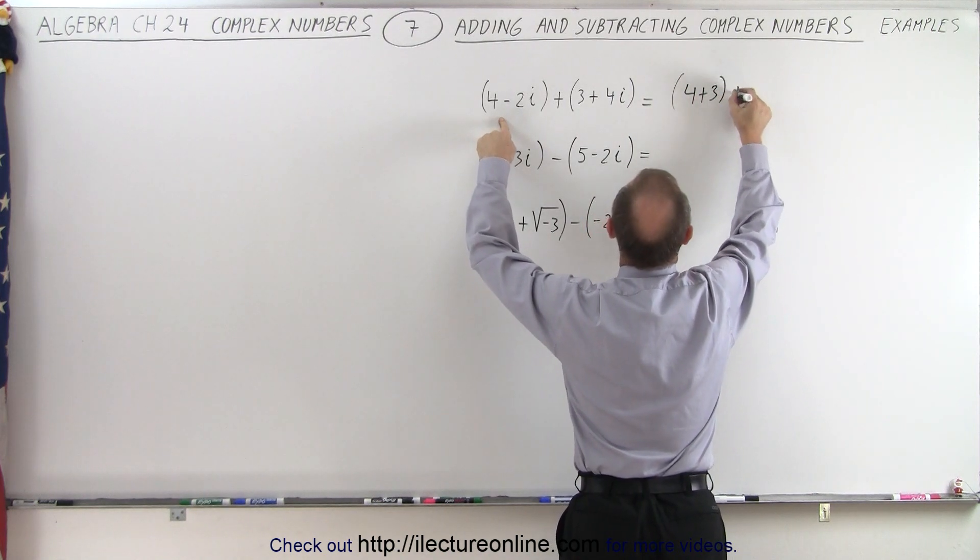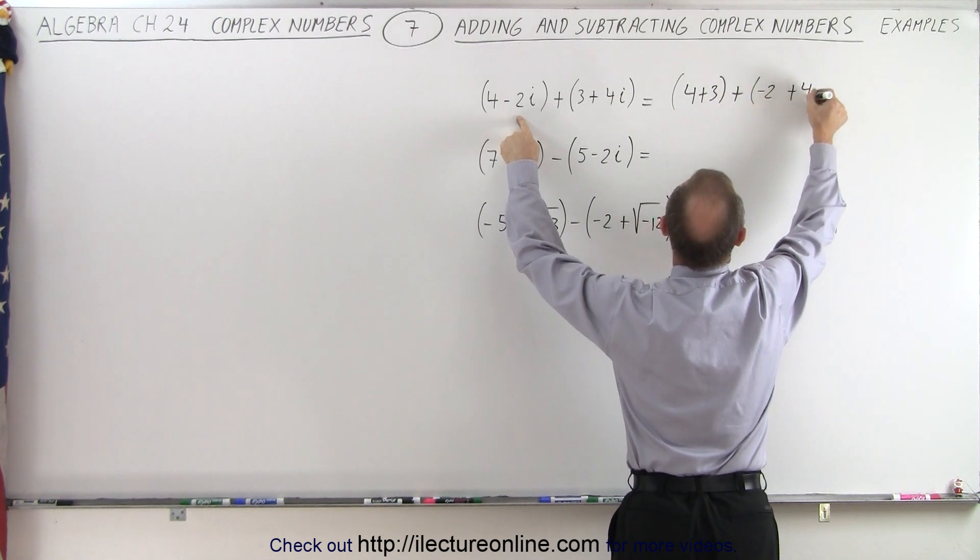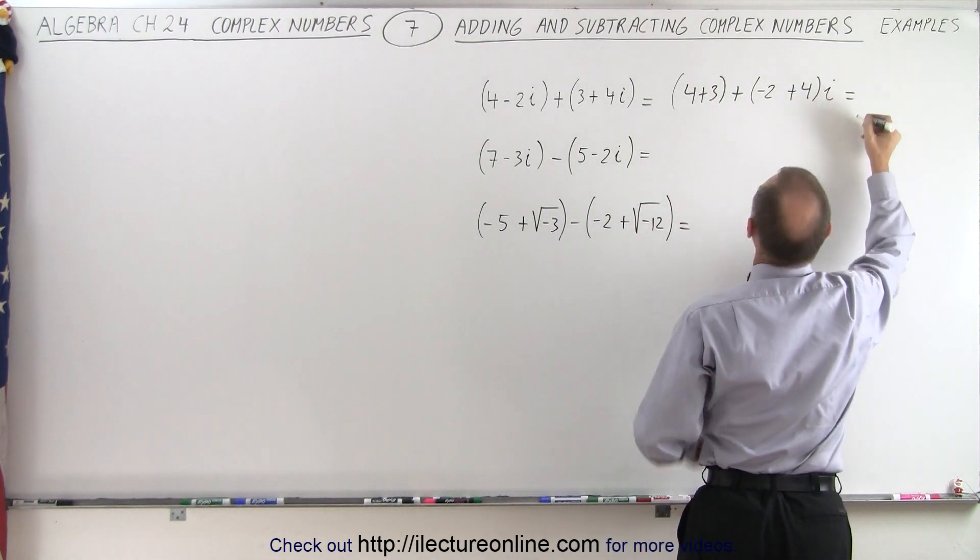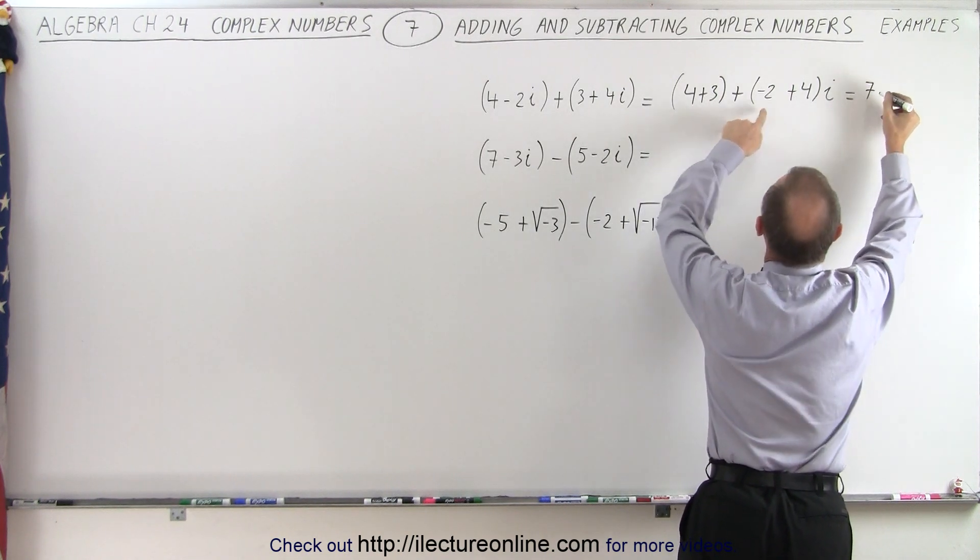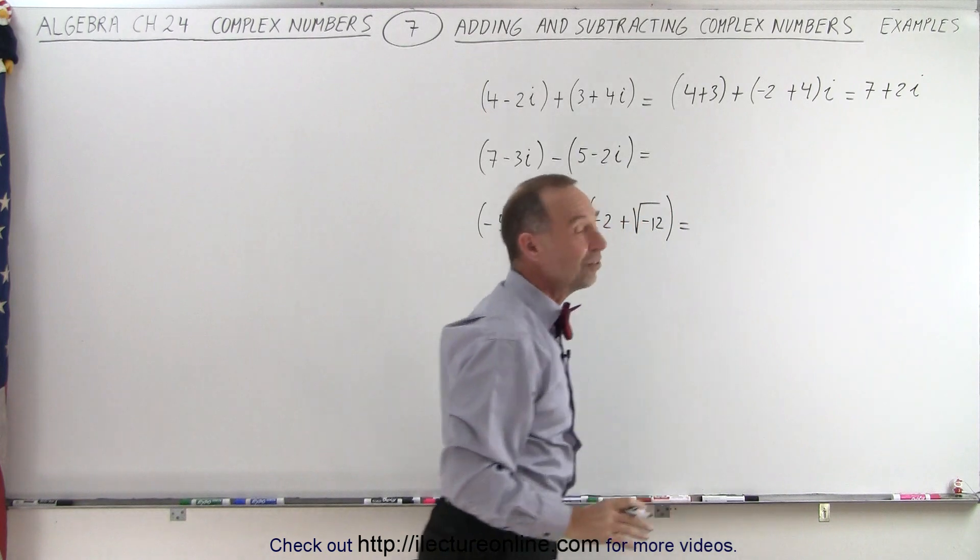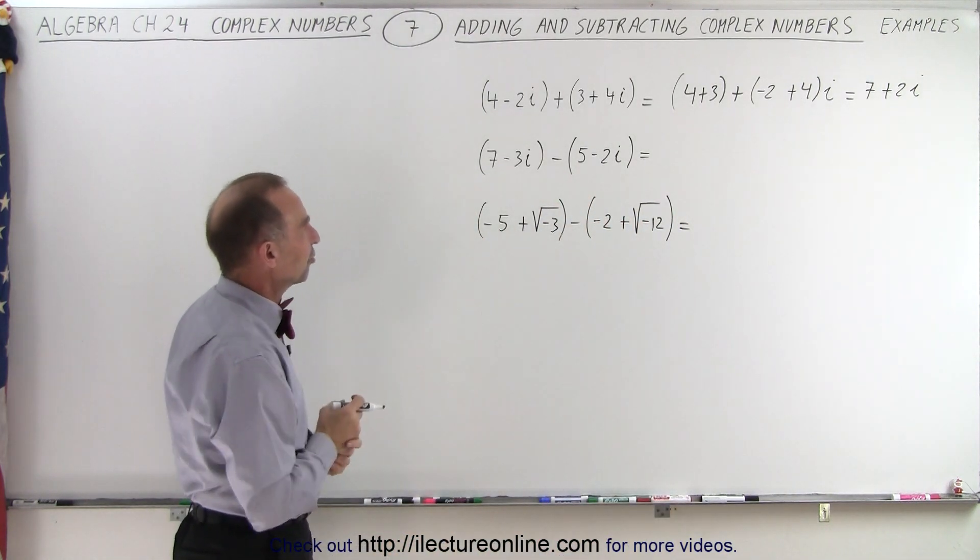and then plus for the imaginary parts, we have minus 2 plus 4, and that would be times i. And then of course if we simplify that, that would be equal to 7 minus 2 plus 4 would be plus 2i. And so that's as easy as it gets. We simply add the real parts together and add the imaginary parts together.